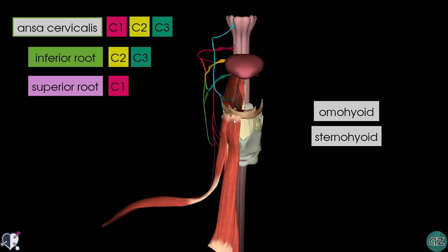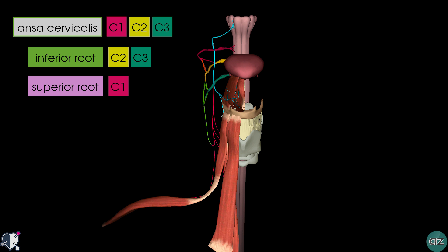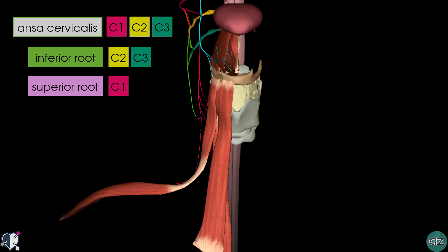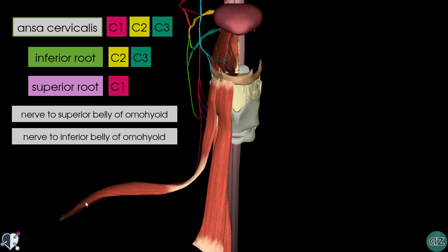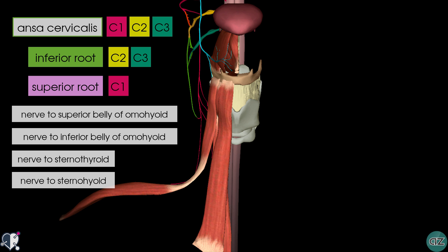Superficially you can see the sternohyoid muscle which attaches at one end to the sternum and at the other to the hyoid bone. Underneath the sternohyoid muscle is the sternothyroid muscle which lies deep to the sternohyoid. Coming off the ansa cervicalis are two branches to the omohyoid — a branch to the superior belly and a branch to the inferior belly. The second branch down is the nerve to the sternothyroid muscle, and then the one below that innervates the sternohyoid muscle. These infrahyoid muscles act to depress the hyoid bone, which is important in swallowing and in speech.